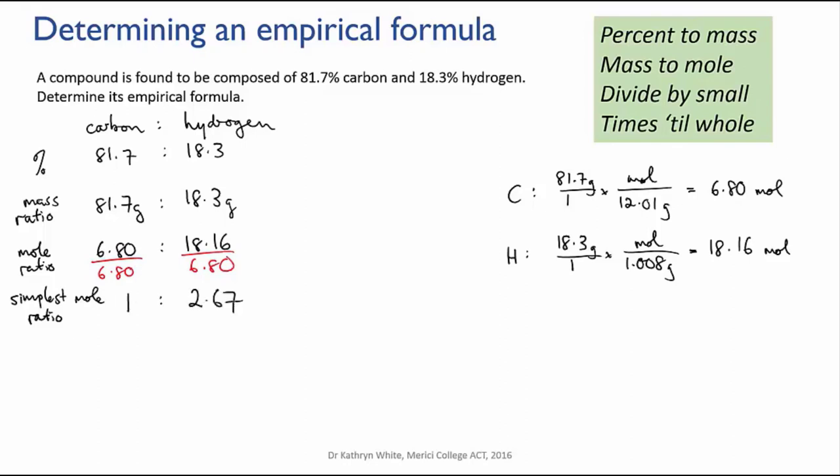Now we know it's impossible to have less than a whole atom. So this ratio, because it's eventually going to represent numbers of atoms in a molecule, has to be made into a whole number ratio. So the last step, times till whole, just involves multiplying through by a factor until we have a whole number ratio.